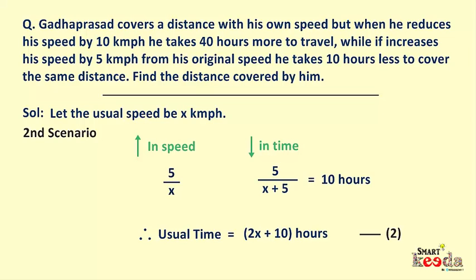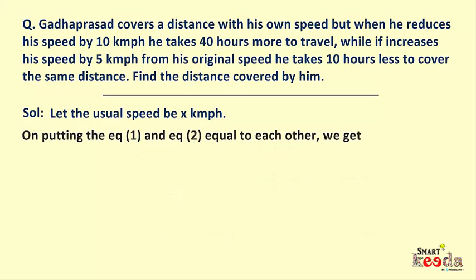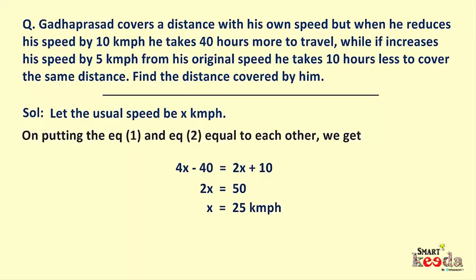Both equation 1 and equation 2 represent the usual time. Therefore putting them equal to each other we get 4x−40 = 2x+10. On solving, we get 2x = 50 and therefore x = 25 km per hour. Now we can find the usual time by putting the value of x in either equation. Putting x into equation 2, we get the usual time = 2(25)+10 = 50+10 = 60 hours.